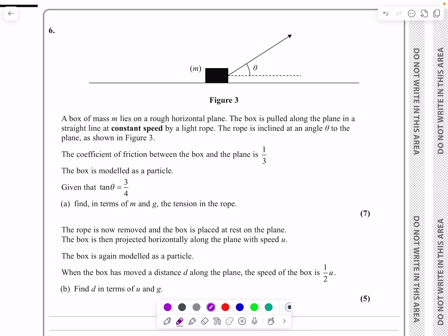Okay, this is the M1 paper from June 2024, question number six. We have a statics question for the first part here. There's constant speed so there's no acceleration, and then later on the rope's going to be removed, so we'll have a dynamics part for part B.